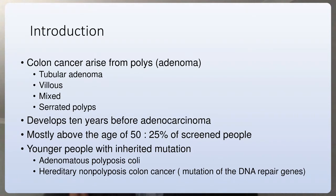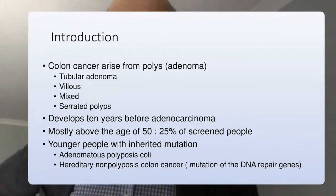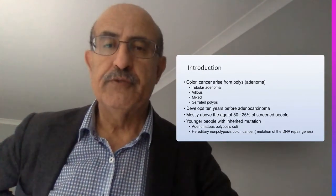Lynch syndrome is caused by mutation in the DNA mismatch repair genes, such as MLH1, MSH2, and PMS6. These genes are responsible for proofreading the DNA during cell division to ensure no mistakes occur. If mistakes are found, the cell is committed to repair, or the cell is committed to apoptosis by activation of the p53 gene. Familial adenomatous polyposis coli is autosomal dominant, while Lynch syndrome tends to be more multifactorial with recessive genetic components.